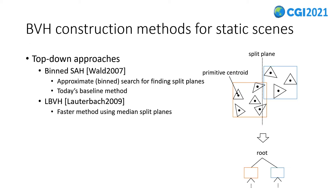The BVH tree is created from scene data as a pre-computation. For static scenes — that is, scenes without moving objects — many excellent methods are proposed. They are classified into two categories: top-down approach and bottom-up approach. In top-down approaches, a set of primitives is partitioned into two subsets by setting a split plane and classifying based on the positions of centroids of primitives. This dividing process is recursively continued. The surface area heuristic approach uses primitive bounds for finding split planes, and this method is kind of today's standard algorithm.